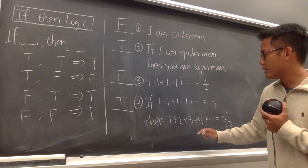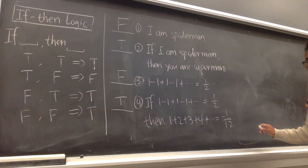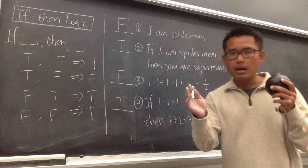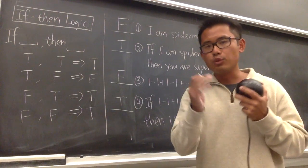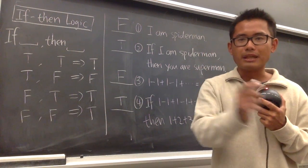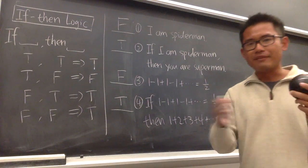So if you tell me, just, what is 1 plus 2 plus 3 plus 4 plus dot dot dot? If you just tell me that only, and you ask me if that's equal to negative 1 over 12 or not, I will tell you, no, it's not, because 1 plus 2 plus 3 plus 4 plus dot dot dot, it diverges to infinity, right?